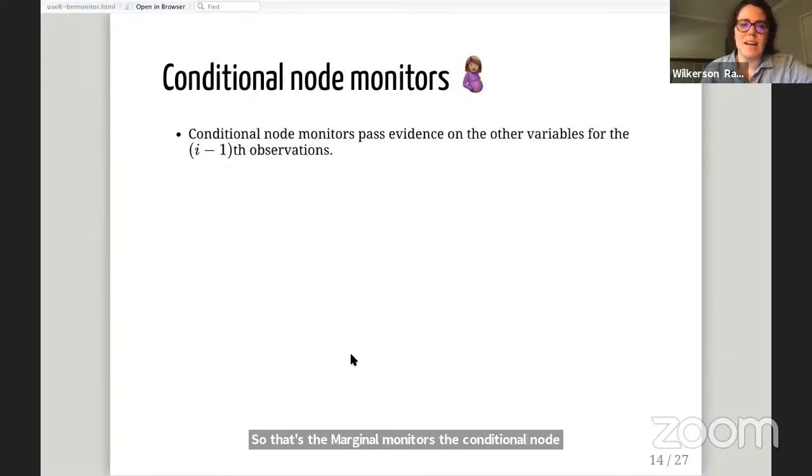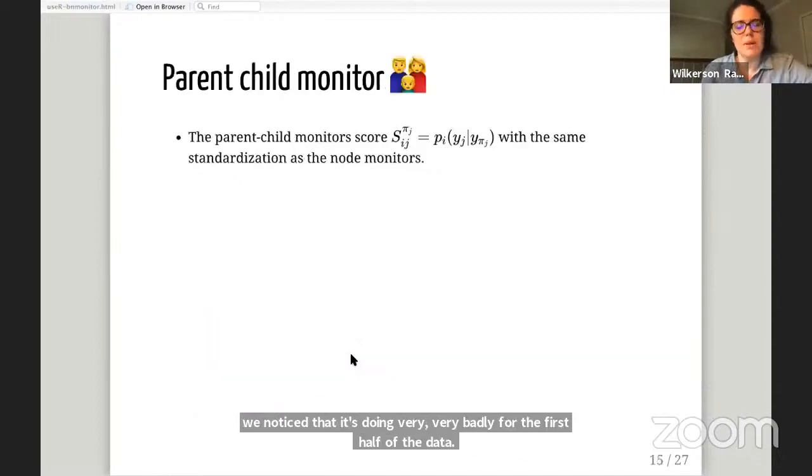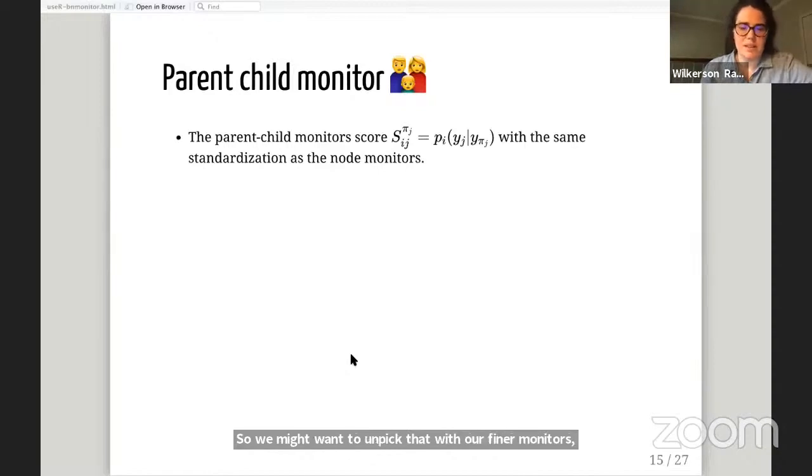The conditional node monitors are very similar, except when they get to that next observation yi, they also pass evidence on all the other variables for that ith iteration. That can give us another indication of how good the probability function is. Here's an example of a node monitor that is giving some issues. This is modeling pregnancy. We noticed that it's doing very badly for the first half of the data. So we might want to unpack that with our finer monitors.